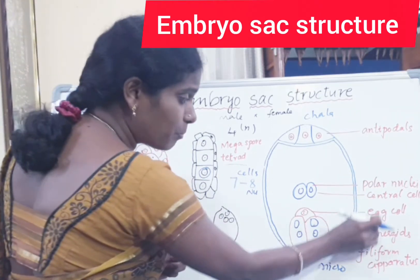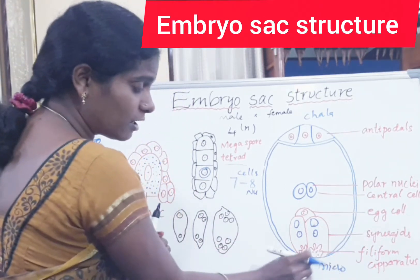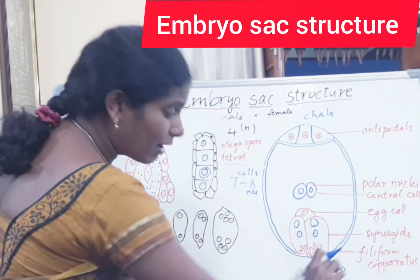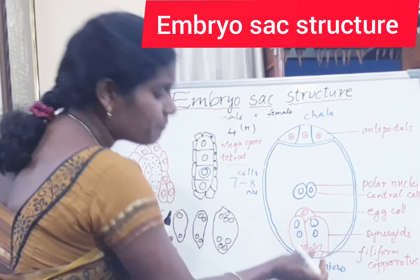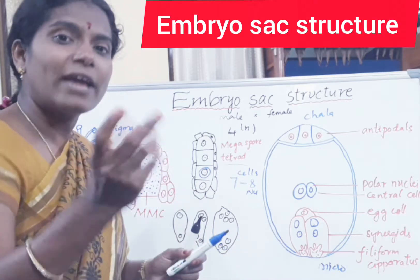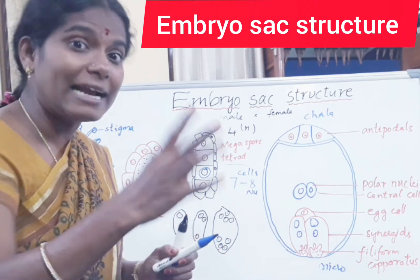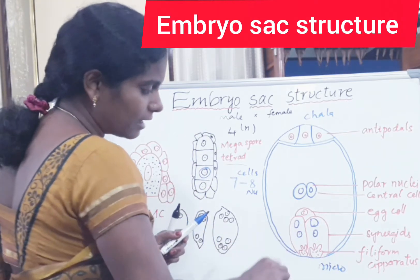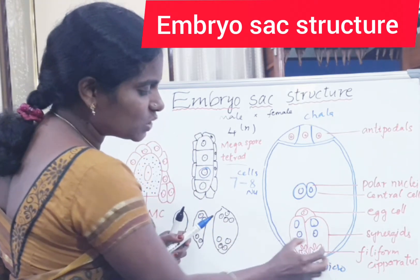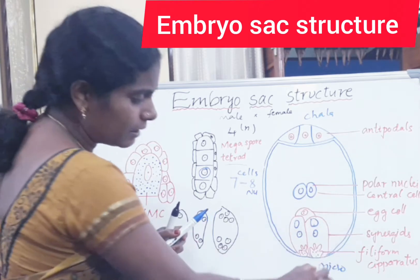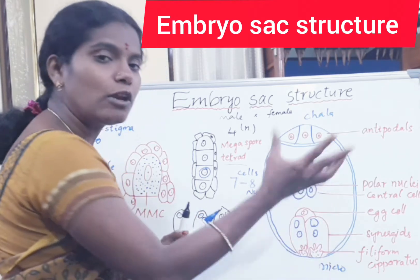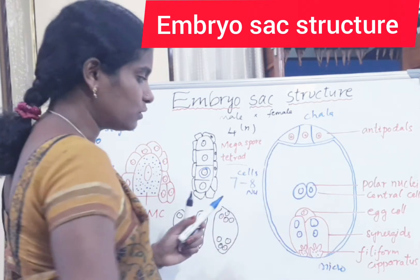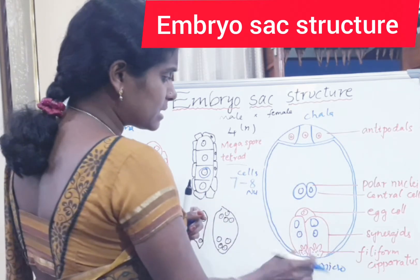When the pollen tube enters the embryo sac, the filiform apparatus guides its path. One synergid ruptures so that the pollen tube can enter inside the embryo sac.